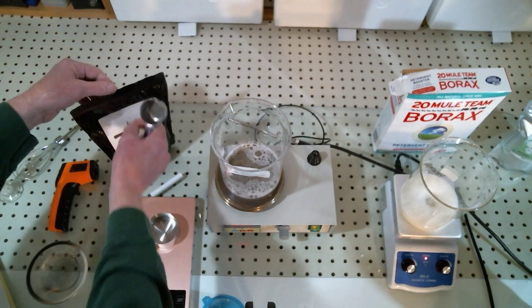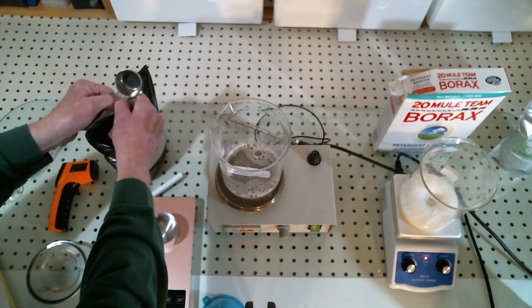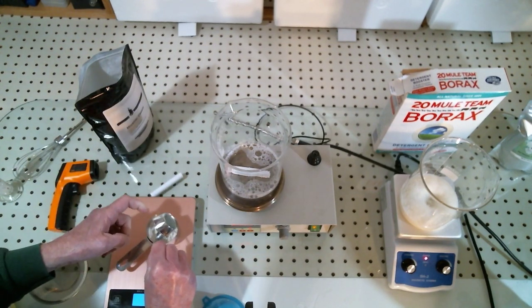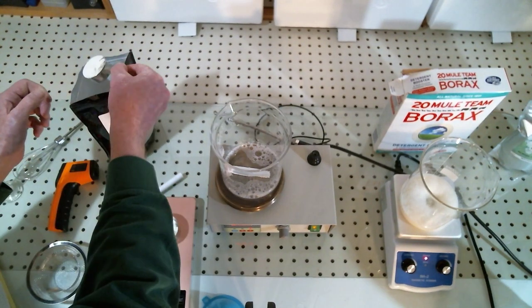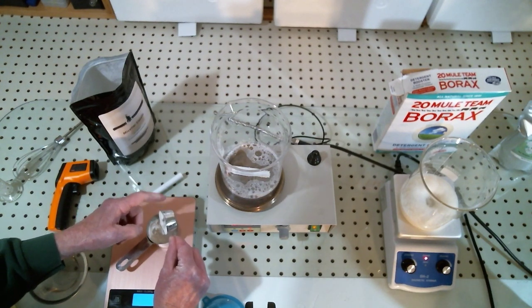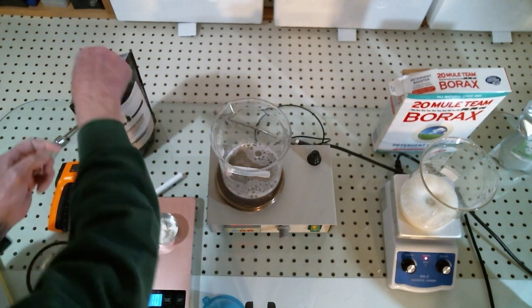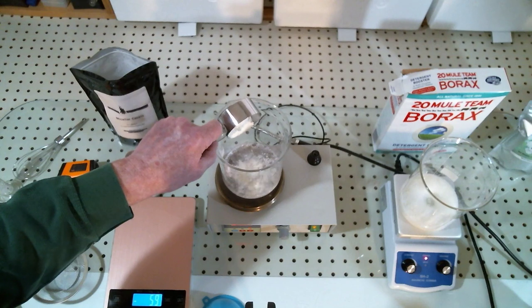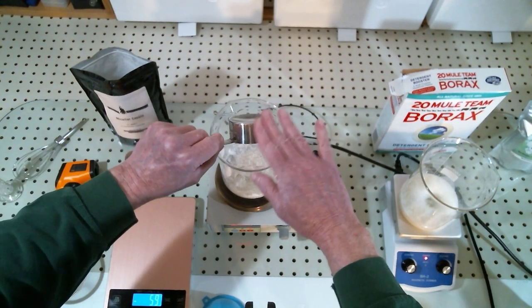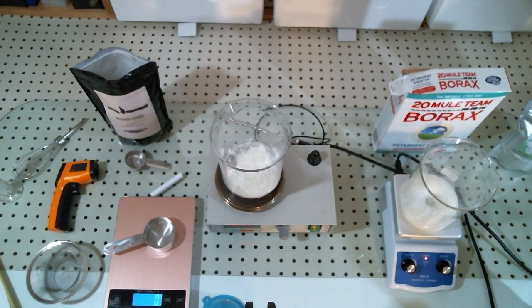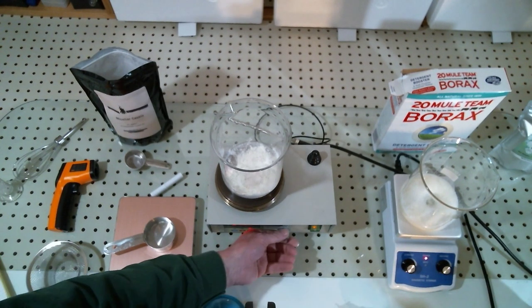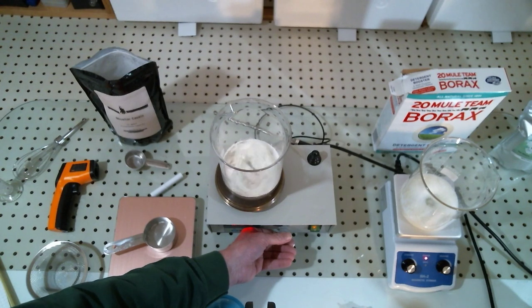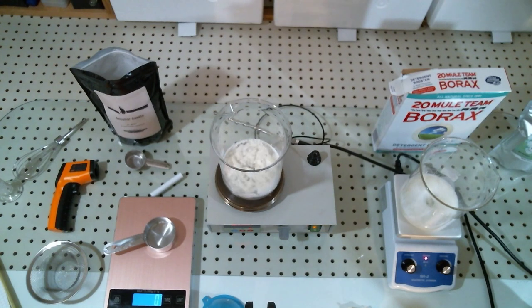To that I'm going to add 10 grams of casein. I seem to have forgotten to sift it in, but as you saw, it doesn't help much. We're going to let this also stir for a couple of hours, and I'm going to close now and set up for the third formula.